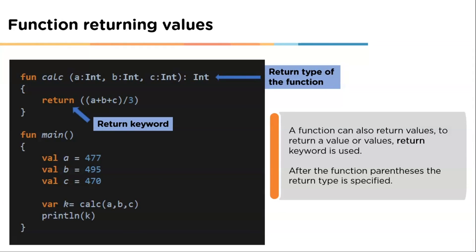Now let's understand function returning values. Just like printing values, functions can also return values. To return a value, a return keyword is used. Also, while returning a value, the return type of the function is also specified. As you can see in the example, 'int' is the return type of the function, and the return keyword is used to return values to the main function where they are getting printed.